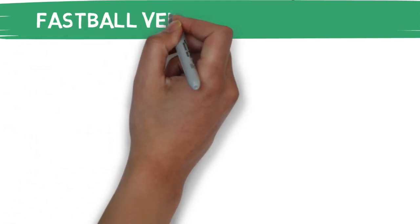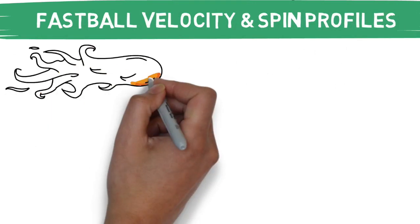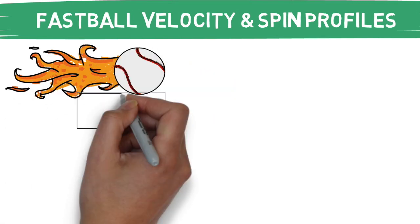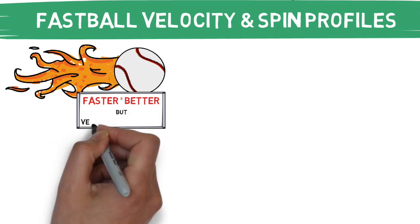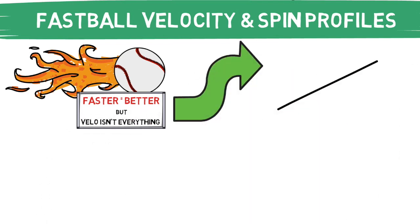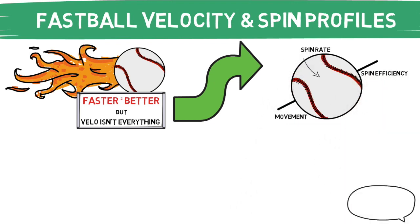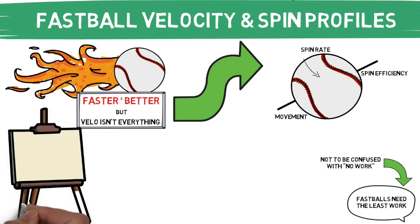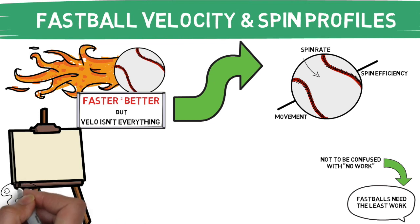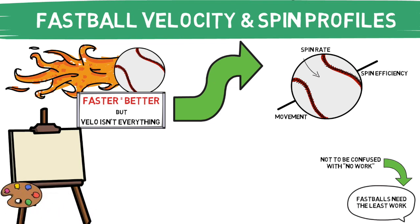Now that we've covered the typical fastball and its ideal movement profiles, let's jump into the velocity and spin profiles. Yes, throwing your fastball harder on average is going to yield better results. But velocity isn't everything — there are several more factors to take into account, such as the pitch's movement and spin efficiency. Typically in a full pitch design session, the majority of your time will be spent on breaking balls. However, this shouldn't be confused as not working on your fastball. Many coaches think pitch design means diving in to create the nastiest slider on the team and forget all about the fastball.